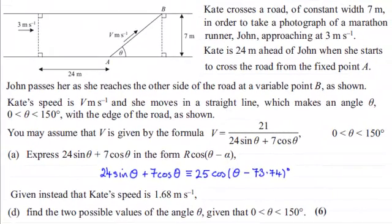Hi there. Now you may recall that we've got Kate's speed given by this formula V, equaling 21 all divided by 24 sine theta plus 7 cos theta. And in part A we had to give another version for this denominator here. We had to express 24 sine theta plus 7 cos theta in the form R cos theta minus alpha, which we did.